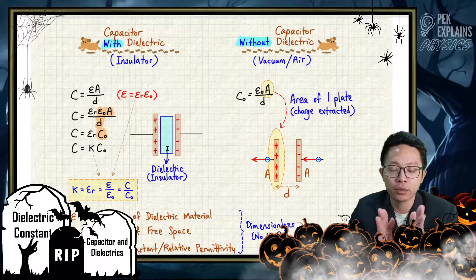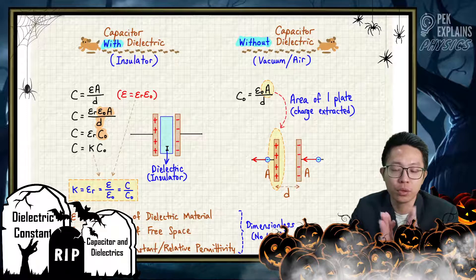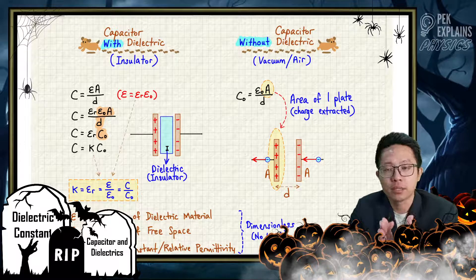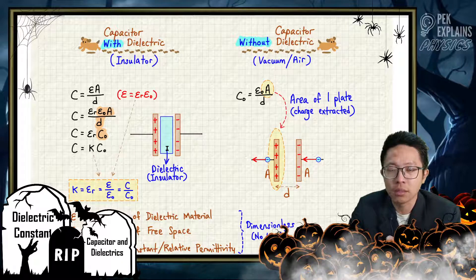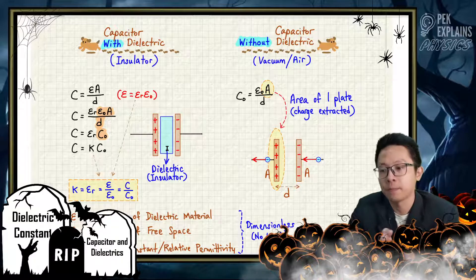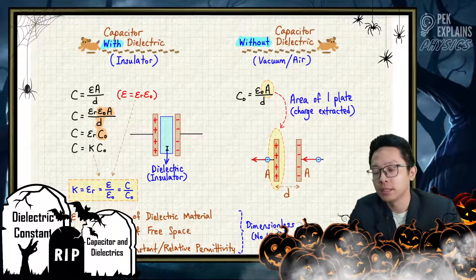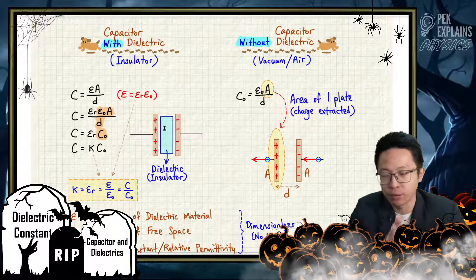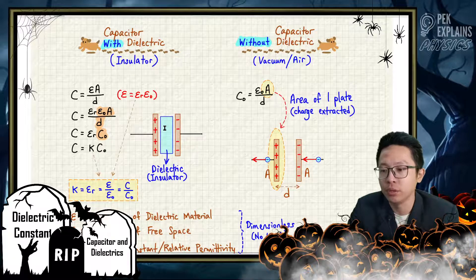We want to avoid them from touching each other, because if they touch each other, this capacitor will short circuit and not be able to store charge. So this dielectric is very useful to prevent these two plates from coming together.